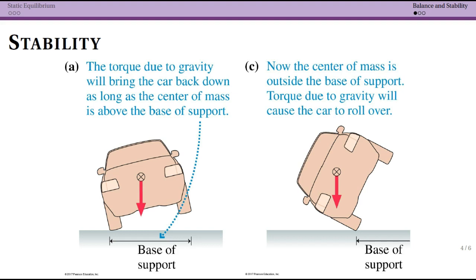Let's imagine a car that is starting to tilt such that it's only on one wheel. We call the distance between the wheels the base of support, and as long as the center of mass is between those, we see that the gravitational torque is going to rotate it back in the right direction.